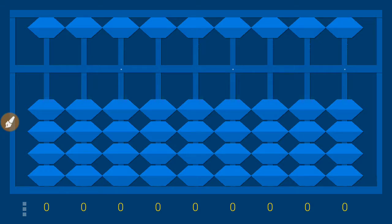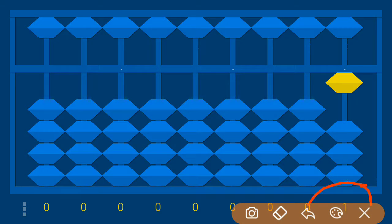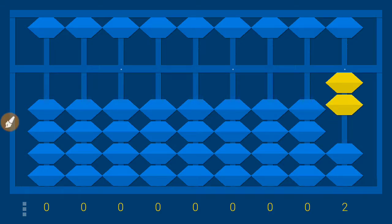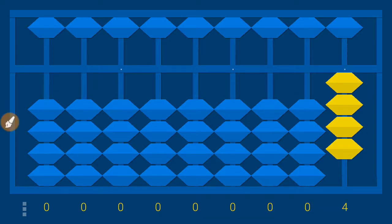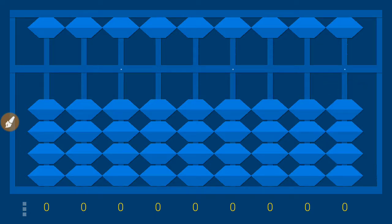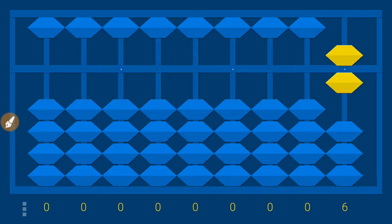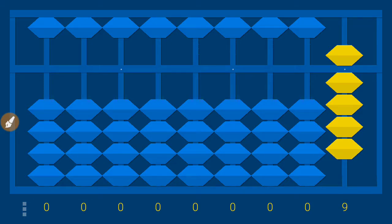Counting is very simple. To count one, push one bead up — it turns yellow, meaning it is active, and you can see the number shown below as one. Two, three, four. As I said, the upper bead has a value of five, so when you run out of lower beads, put them all down and click the upper bead up — that is five. Then six is five plus one, seven, eight, nine. Now we have only nine beads.